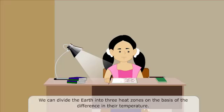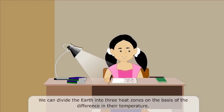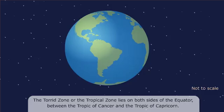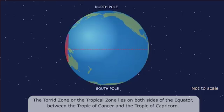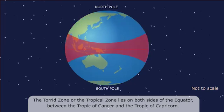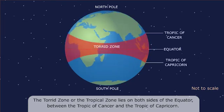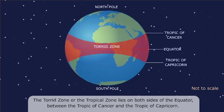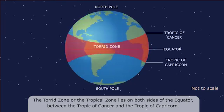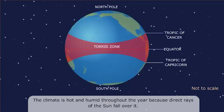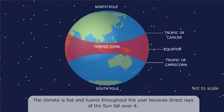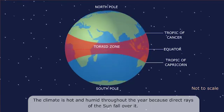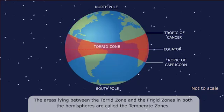We can divide the earth into three heat zones on the basis of the difference in their temperature. The torrid zone or the tropical zone lies on both sides of the equator, between the Tropic of Cancer and the Tropic of Capricorn. The climate is hot and humid throughout the year because direct rays of the sun fall over it.